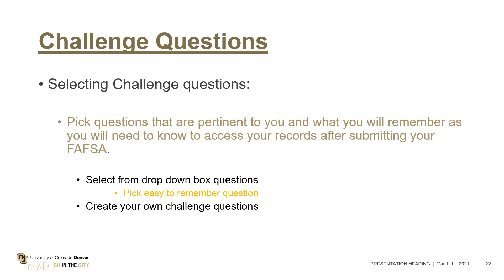Creating the FSA ID username and password is the hardest part of the whole process. Once it's completed, the FAFSA itself may only take 15 to 20 minutes to complete. You will also be asked to select and create challenge questions — pick ones that will be easy to remember. The student and parent each have to select their own. You'll probably pick at least three provided questions and create at least two of your own. Write these down along with your username and password and put them in a safe place, as they will help you gain access to your FAFSA for renewal every single year.